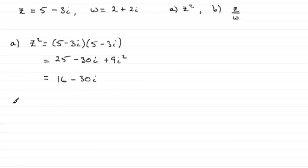Okay, so that's part a. For part b we've got to do z divided by w then. So that's going to be 5 minus 3i divided by 2 plus 2i.